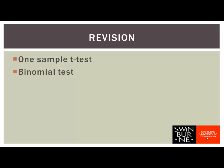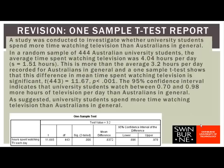So before we start with sampling theory, let's just do a brief review of last week's work, and we'll start with the one-sample t-test. A one-sample t-test is for a metric variable. The essential idea is that we're comparing the mean in our sample to some fixed or reference mean. In the example we were looking at last week, we were comparing the mean time spent watching TV per day in a sample of university students to a reference mean of 3.2 hours per day.